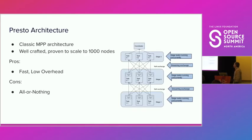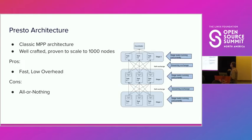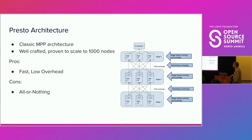To better understand why these large queries are challenging in Presto, it's important to understand its execution model. In Presto, queries are split into multiple stages by the planner, and each stage has a bunch of tasks processing their own chunks of data. The data exchange between tasks is performed in a streaming way, meaning all tasks are required to run at the same time. This allows very low latency with no checkpointing overhead — just network exchanges between tasks.